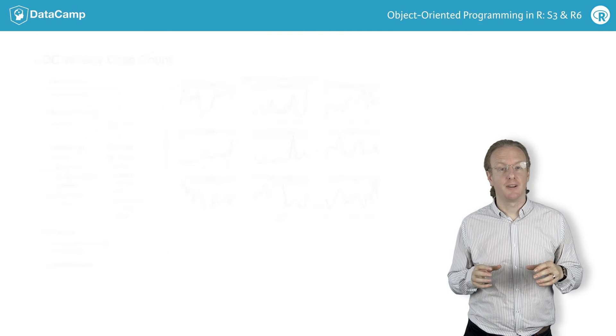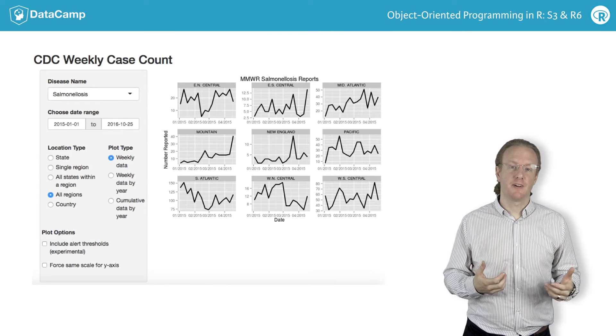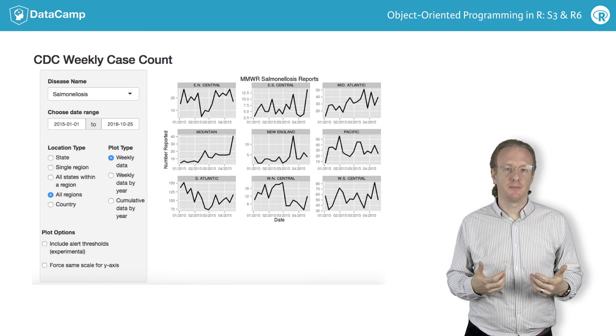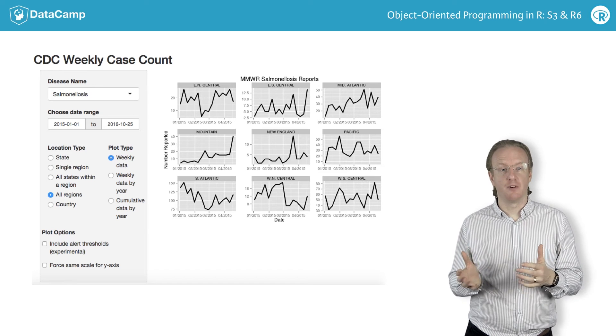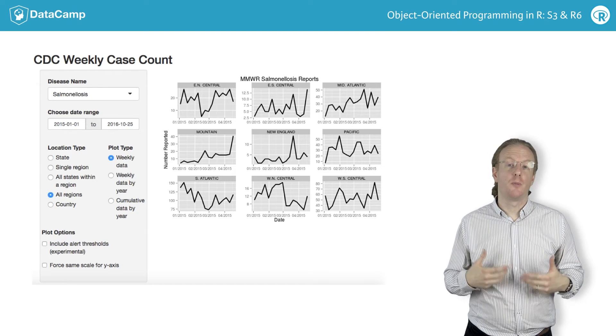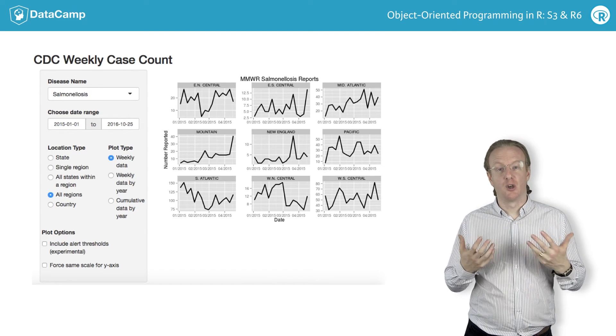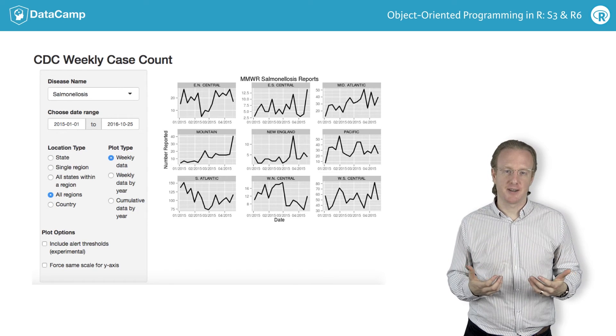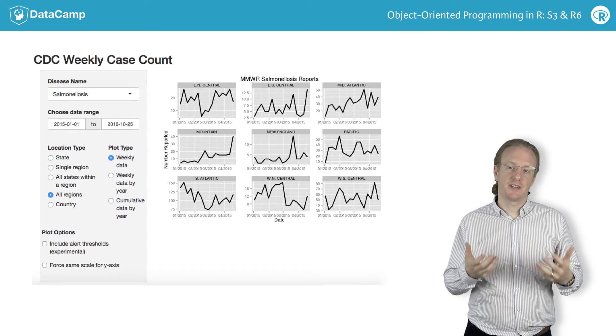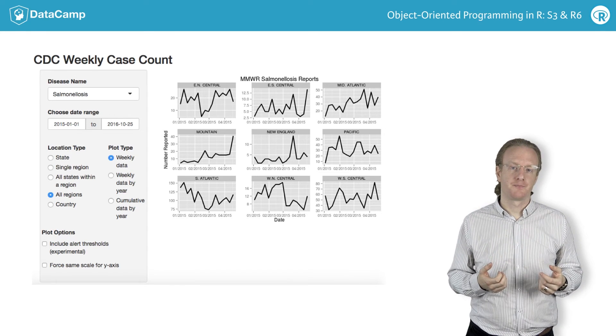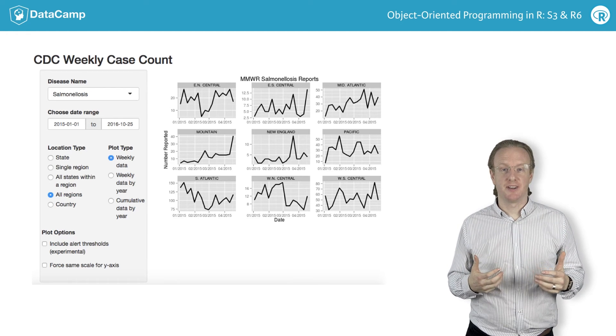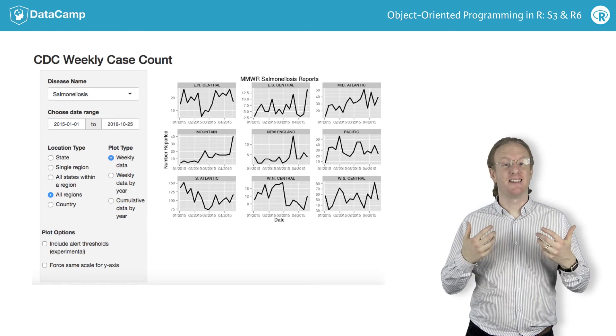A third example is graphical user interfaces, or GUIs. Many of the languages used to build GUIs, such as Java or C-sharp, are object-oriented. For a GUI, again, there are a small number of well-understood objects that you need to consider, like buttons, or text boxes, or check boxes. This screenshot is from a Shiny app, which means that it's a web GUI built in R.